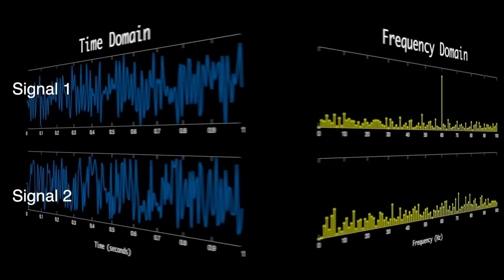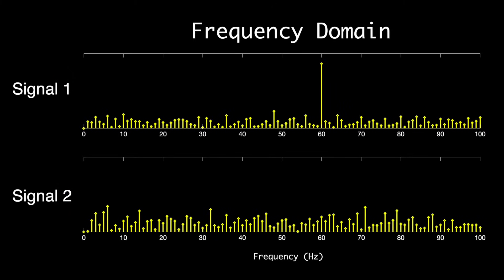But if we transform them into the frequency domain, it's much easier to answer. I mean, it's clearly this first signal, because there's this large 60 hertz peak. So we can use the frequency domain to understand the frequency makeup of a signal.